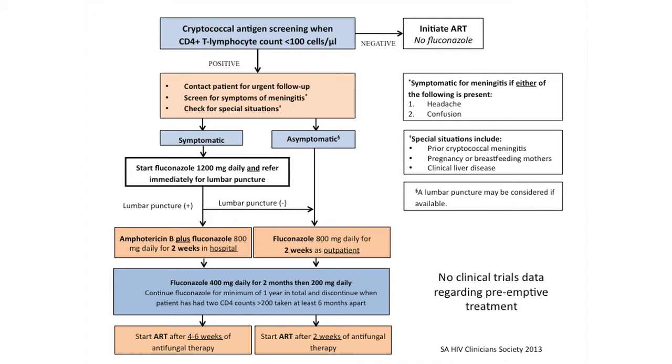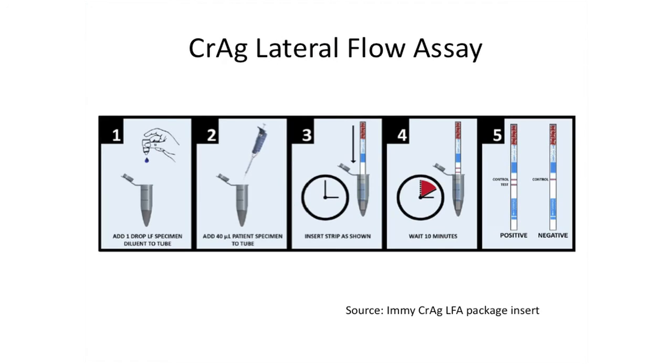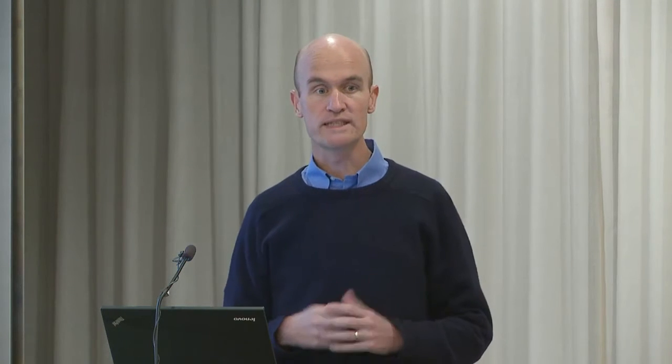In South Africa we've developed an algorithm for screening for cryptococcal antigenemia in patients entering ART care with a CD4 count less than 100. If antigen positive, they're screened for symptoms; if symptomatic, they're referred for lumbar puncture. If asymptomatic and lumbar puncture is accessible, that's the route to go — but in most clinical settings it's not easily accessible. Asymptomatic patients get put onto high-dose fluconazole and then maintenance and secondary prophylaxis. This is based on observational and indirect data. It's facilitated by a lateral flow dipstick assay for detecting antigenemia that takes 10 minutes, can be done on plasma, serum, or whole blood, and can facilitate screening at the point of care.